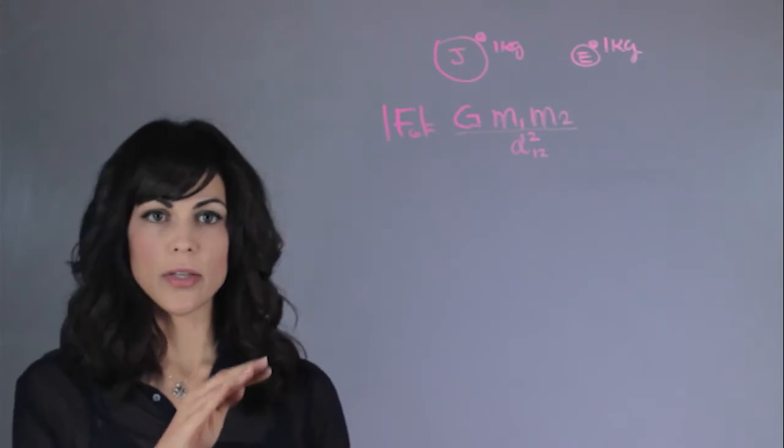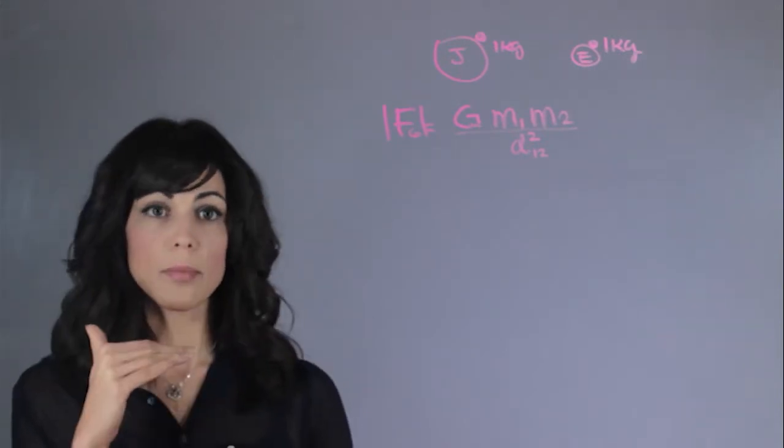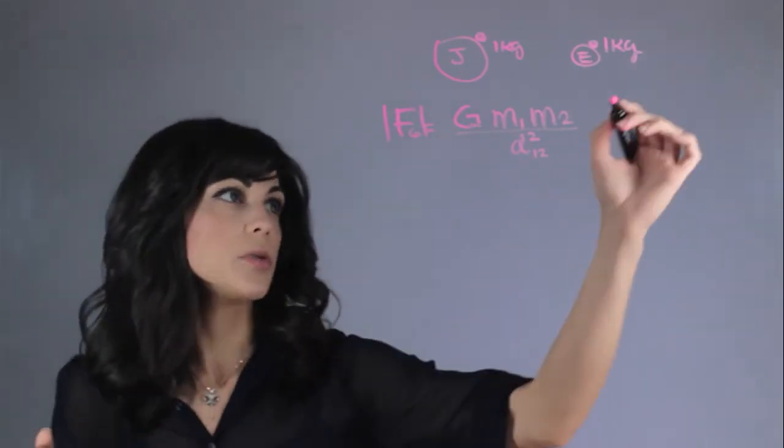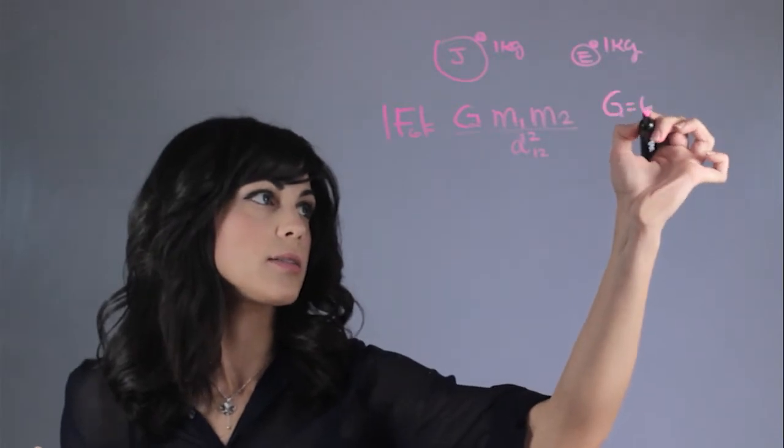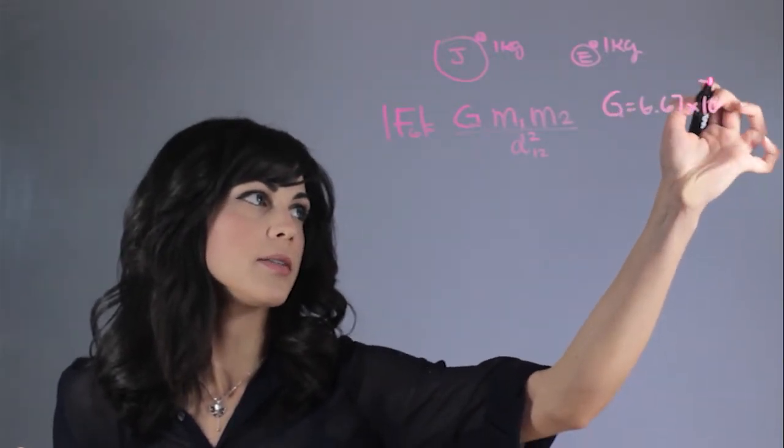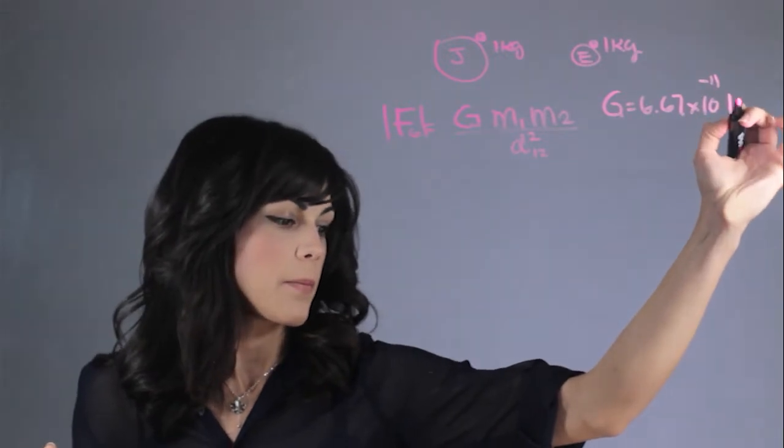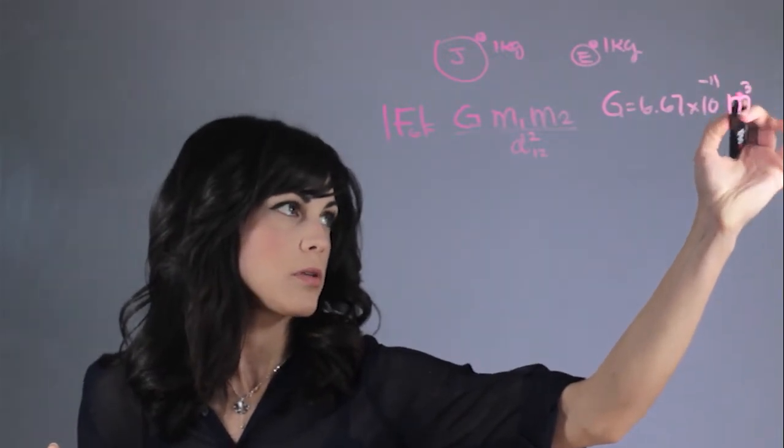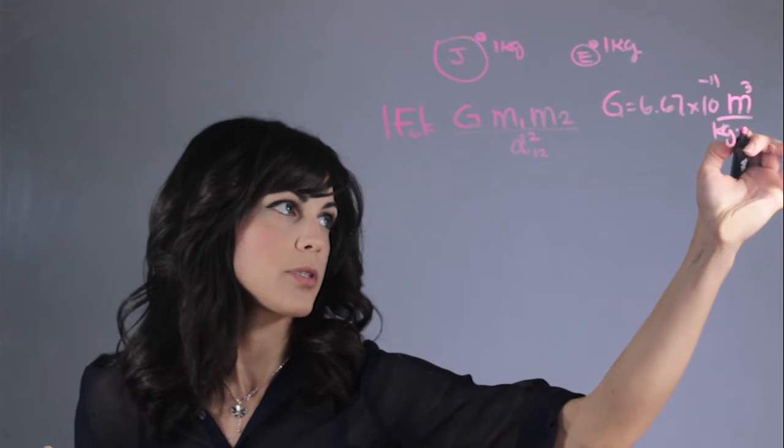Now, in order to calculate this example, we're going to just look at this number. G is 6.67 times 10 to the minus 11 meter cubed per kilogram per second squared.